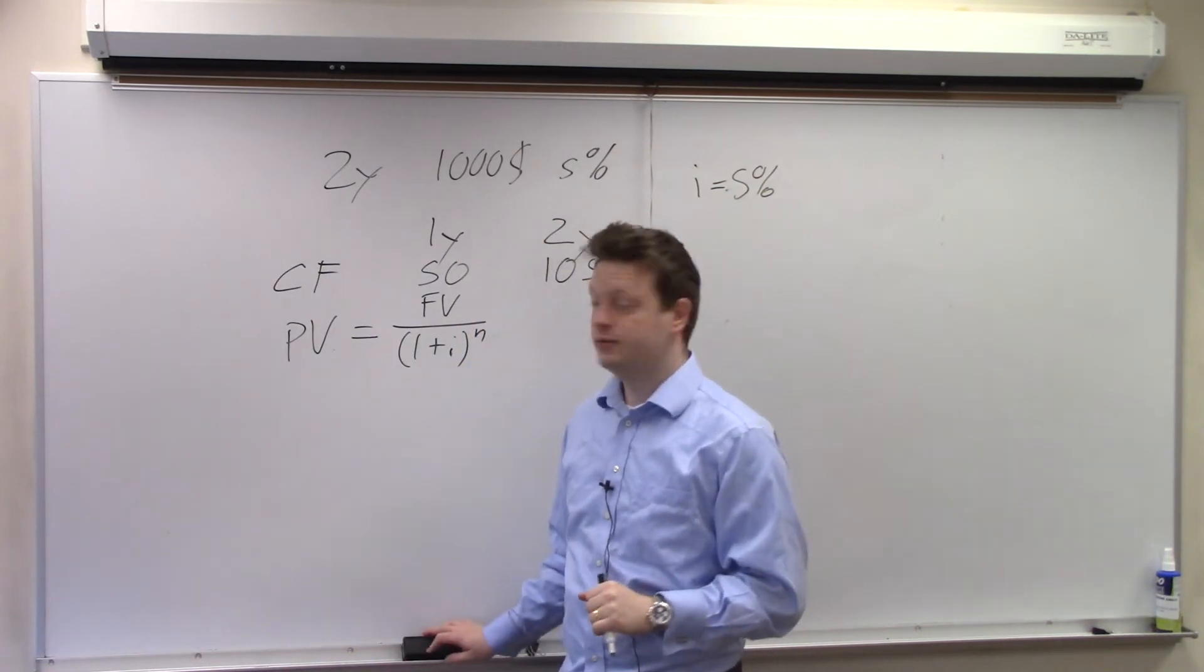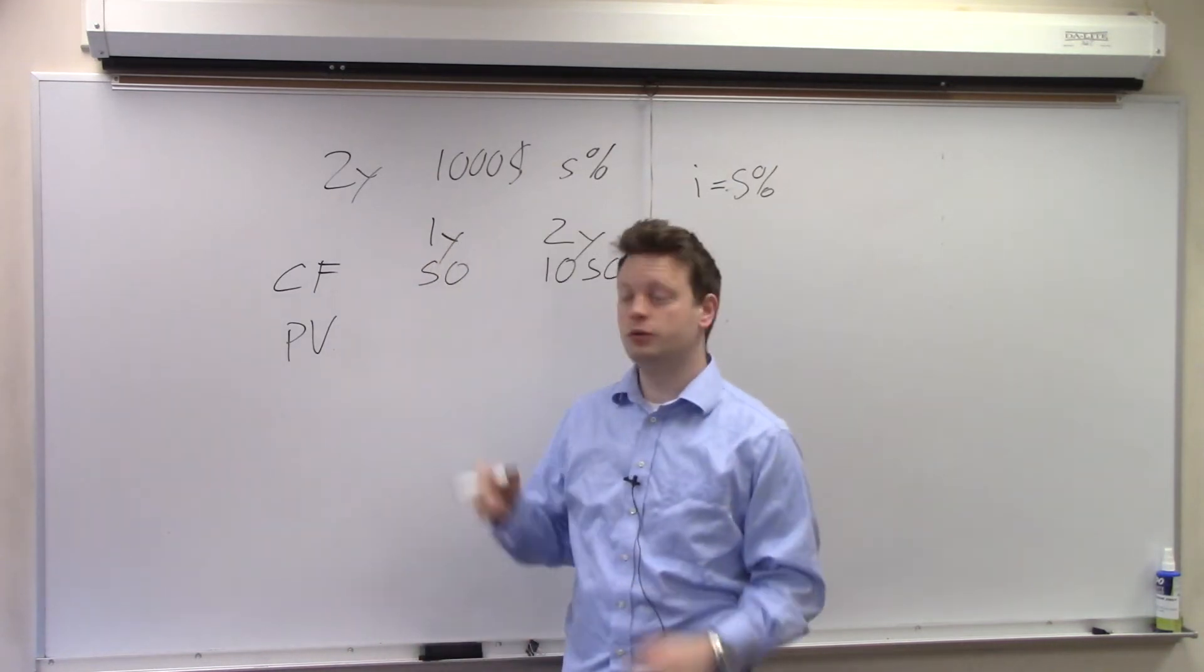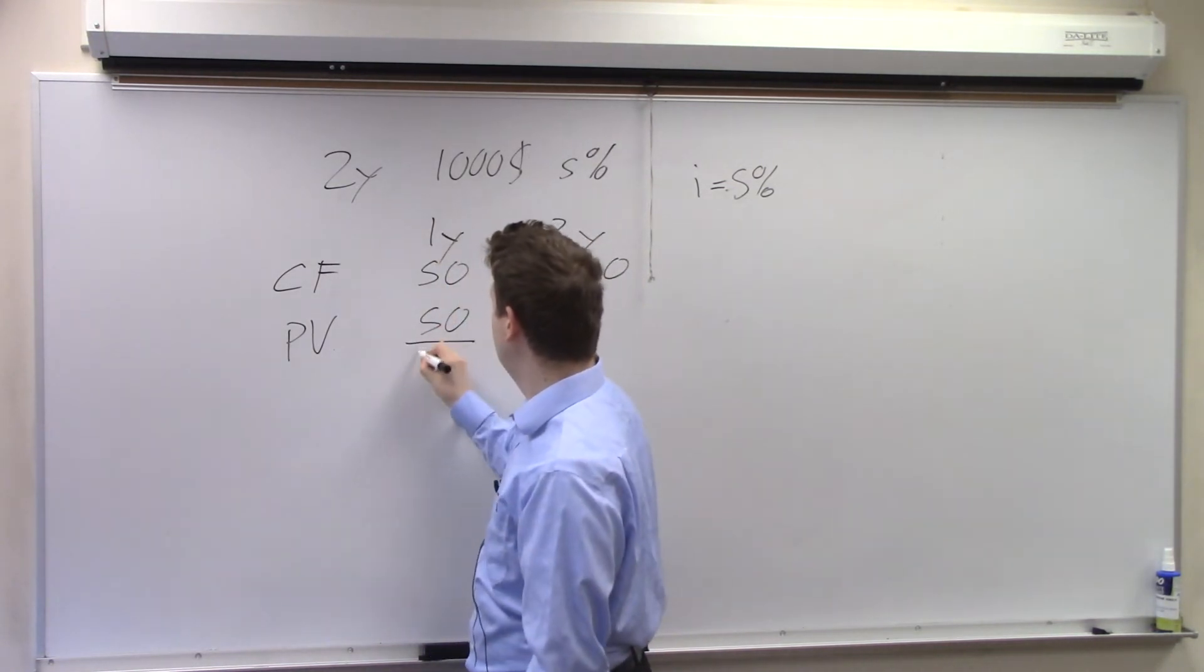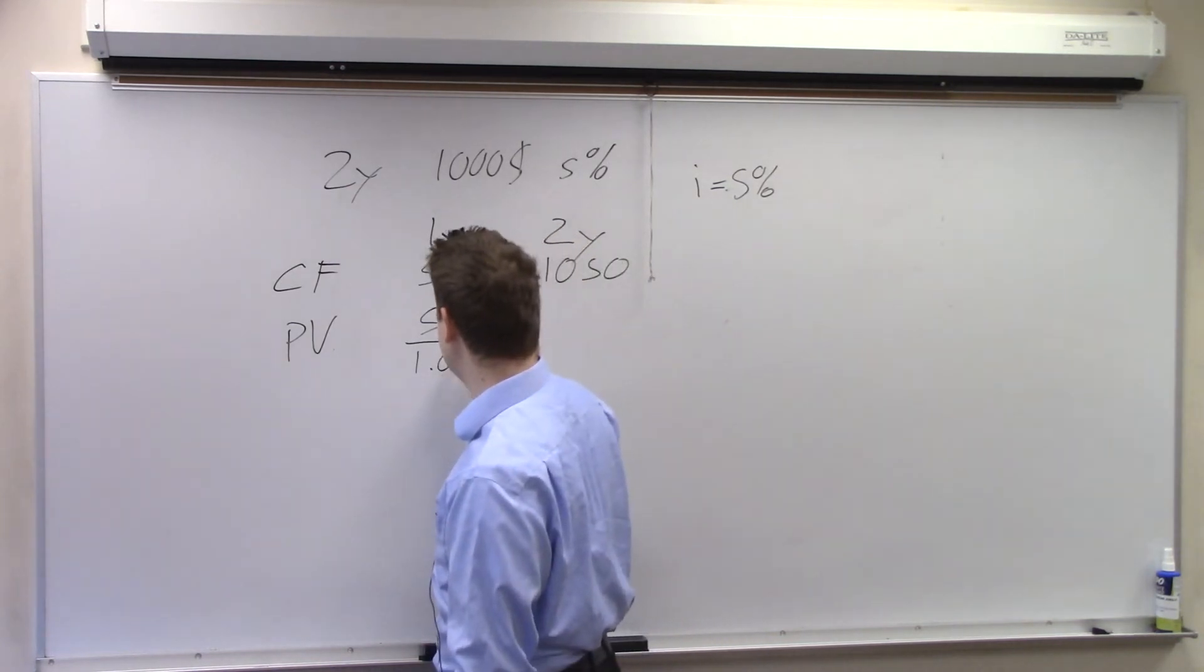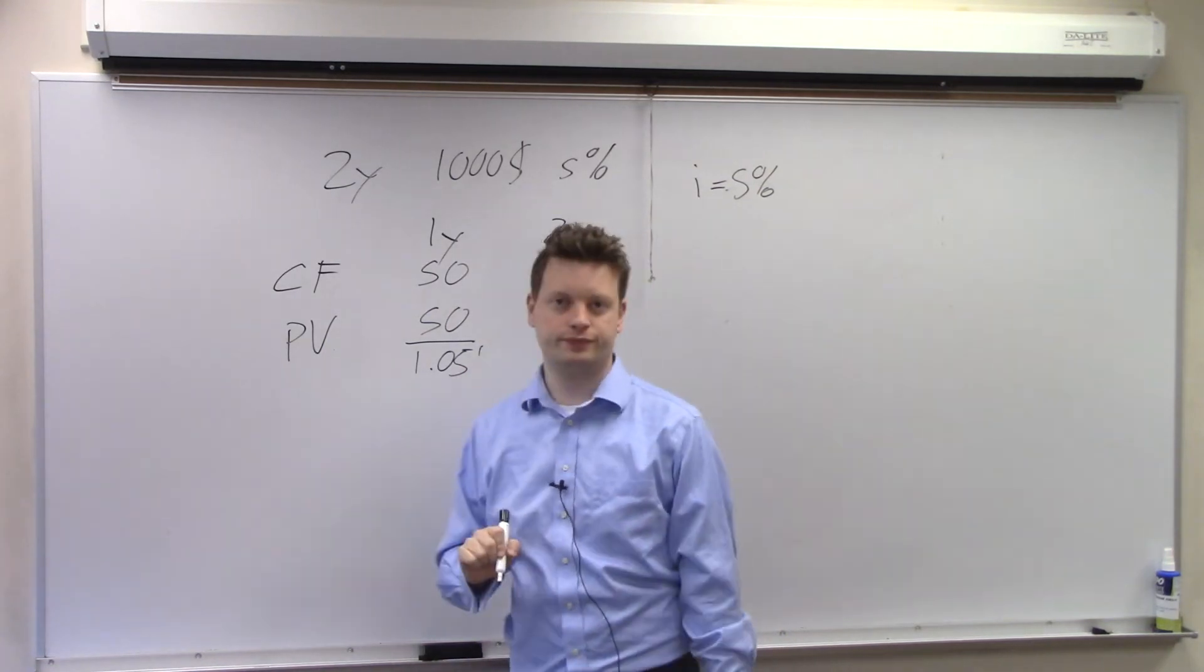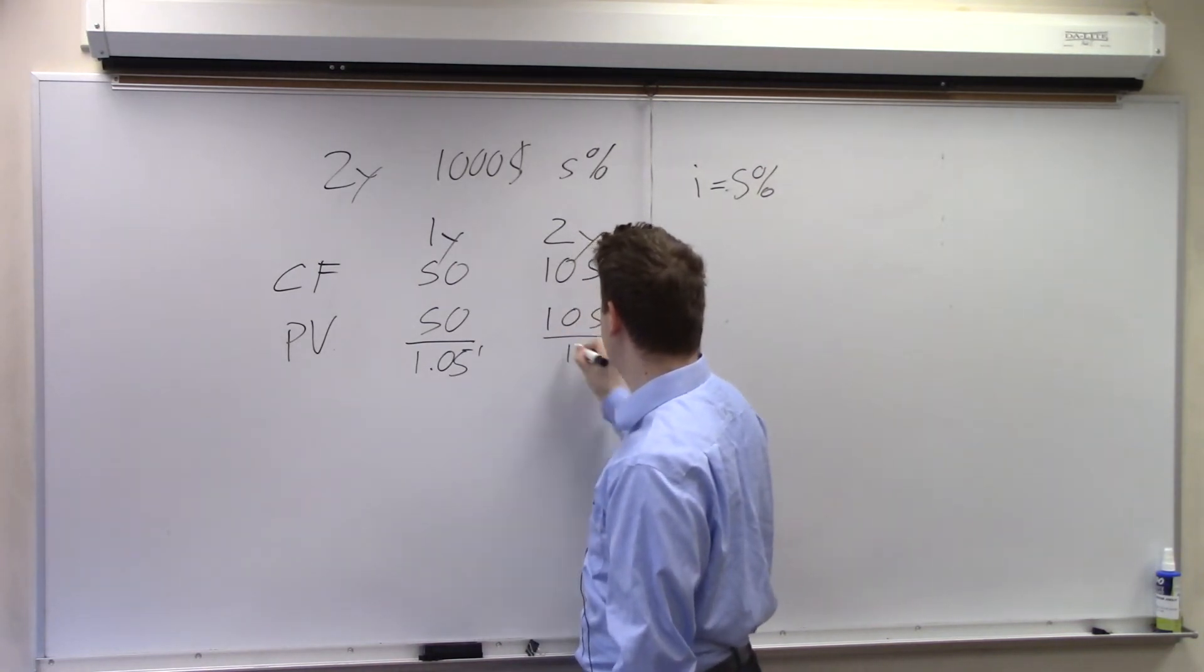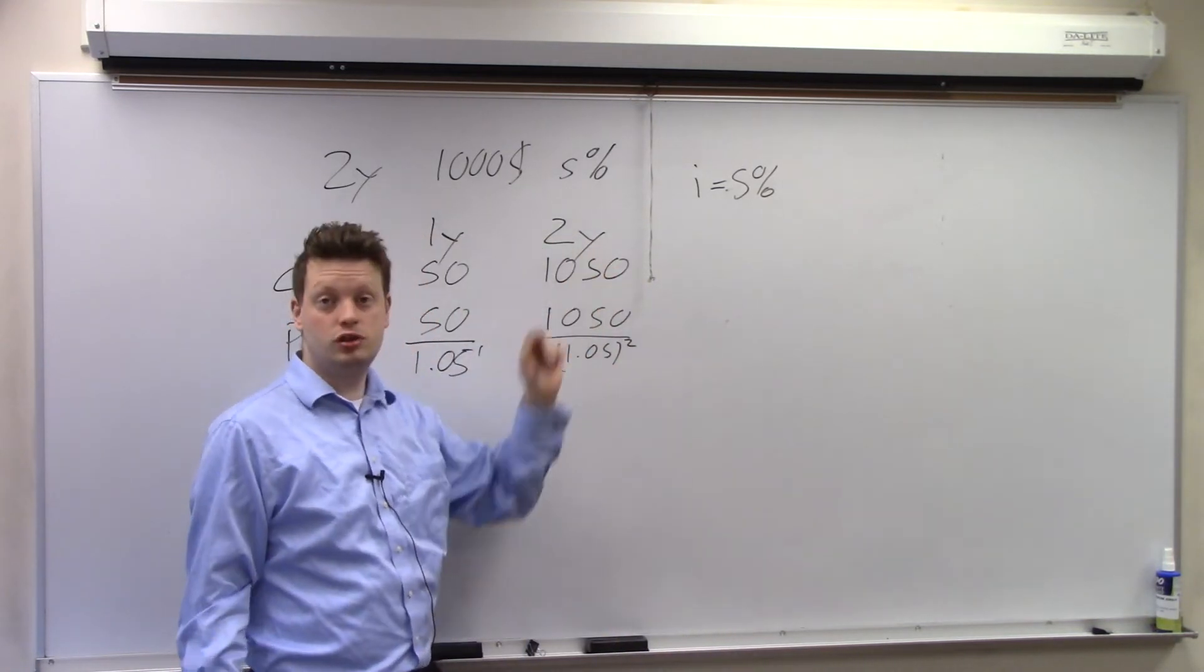So let's do the math. The present value of the first cash flow will be 50 which is the future value over 1 plus the interest rate. The interest rate is 5% so 1.05 to the power of 1. For the second year it will be 1,050 over 1.05 to the power of 2 because it's in two years time.